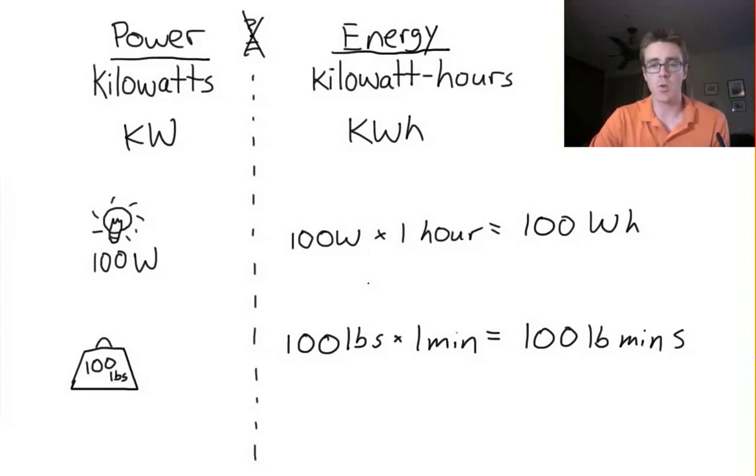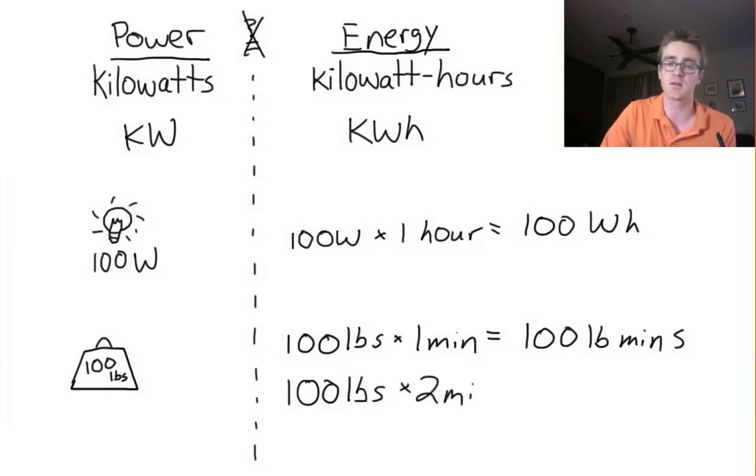Now, let's suppose that we want our weight lifter to lift the same weight for twice as long. For the sake of argument, we'll say he doesn't get tired after the first minute. Well, in order to do this, he would need twice as much energy. He would need 100 pounds times two minutes, and that's going to be 200 pound-minutes.